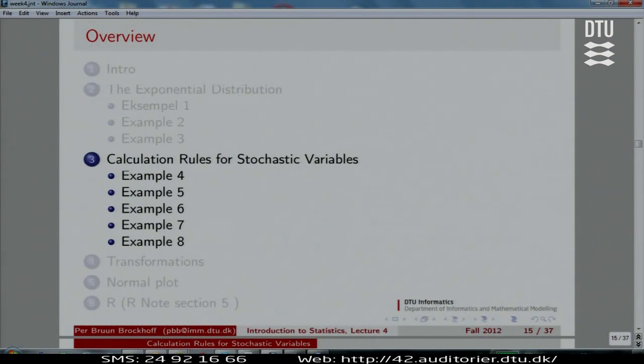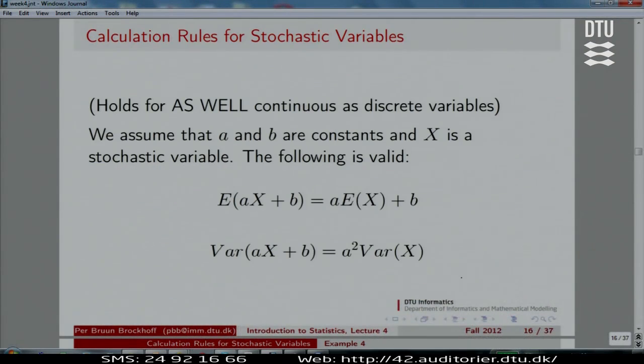Some nice and important calculation rules for stochastic or random variables. Here are the simple ones. I emphasize this part, and we're going to see a couple of examples. These rules are not only for continuous random variables, they hold for general random variables, both continuous and discrete. These are very basic rules.